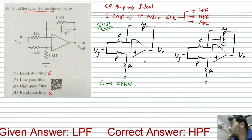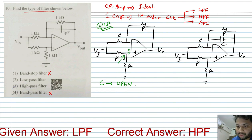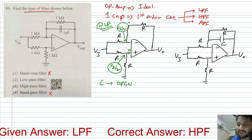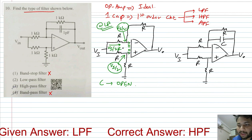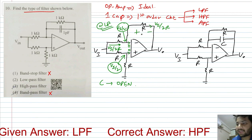Whatever the frequency, the op-amp will always be in negative feedback, so from virtual short, V+ and V- will both be equal. The voltage at the plus input terminal from voltage division is VI/2. If V+ is VI/2, then V- is also VI/2. The input current is 0, so this current will be (VI - VI/2)/R = VI/2R. This current flows through R, giving a drop of VI/2. So VI/2 minus VI/2 means V-out is 0.